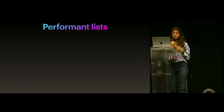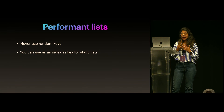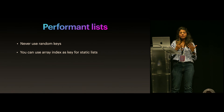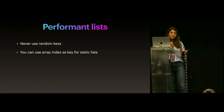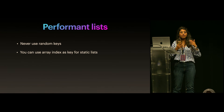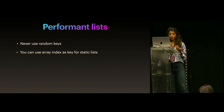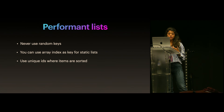For performant lists: never use random keys. You can use array index as a key for static lists if the list is not sortable. Even for some dynamic lists — for example, a paginated list where you know every item will re-render anyway — it's okay. But use unique IDs whenever items are sortable or filterable.